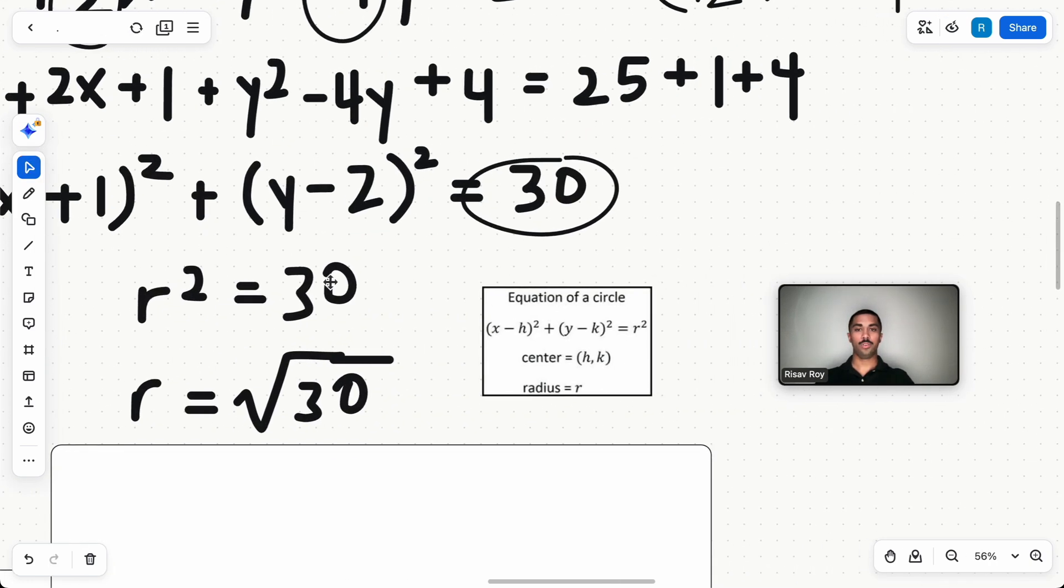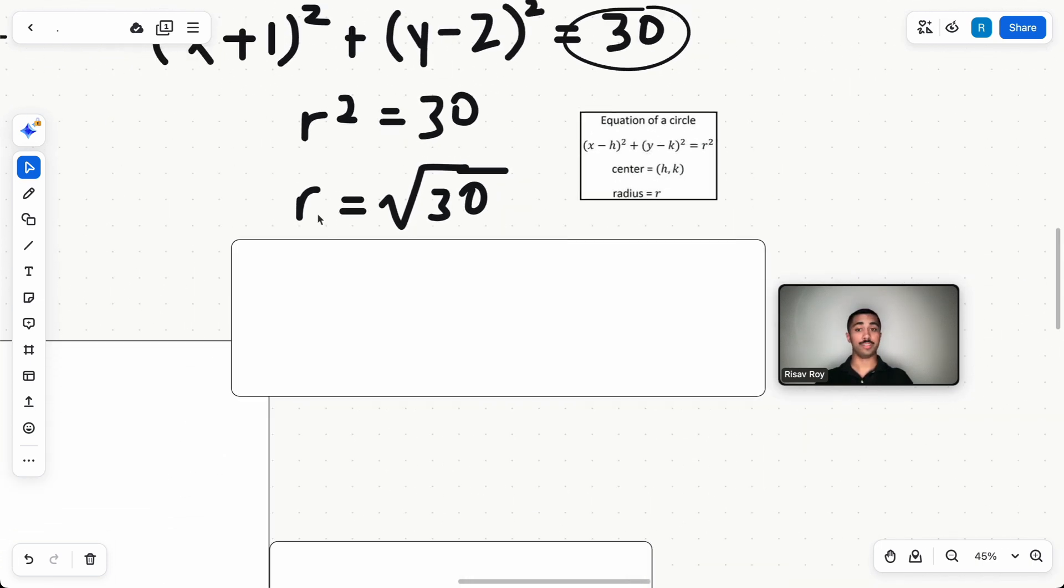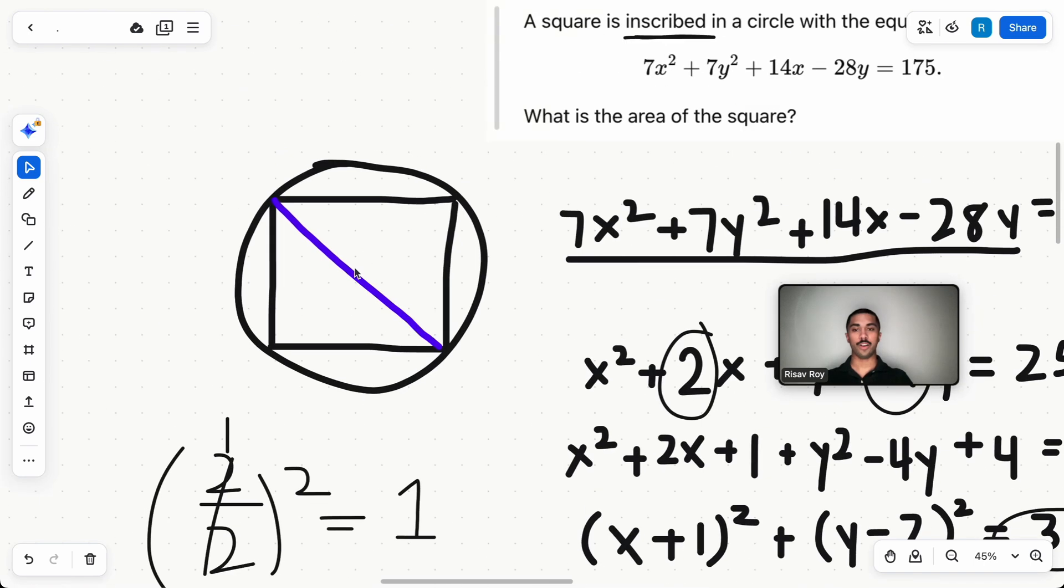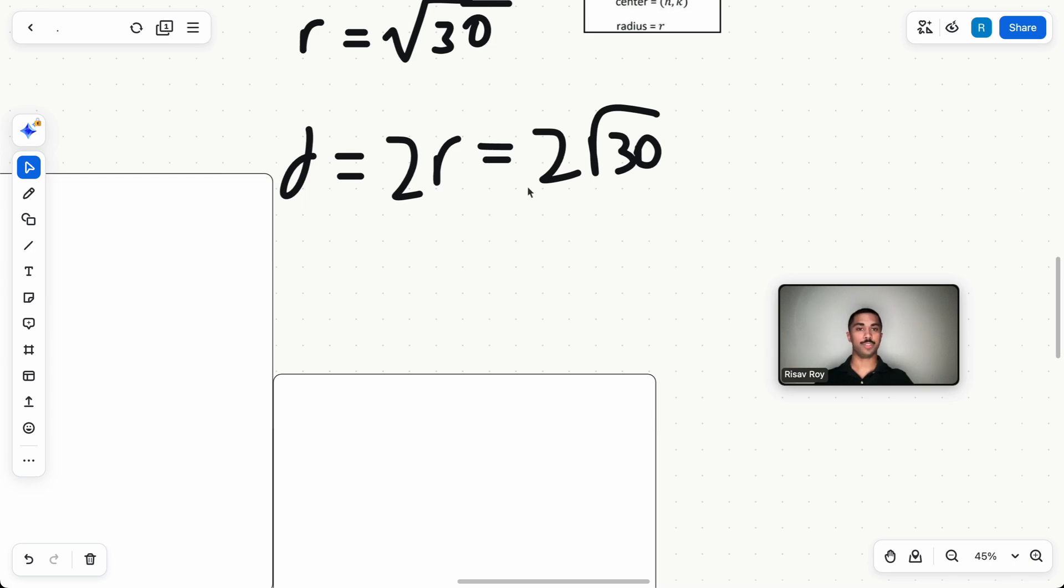Okay, so now this is in the equation of a circle. So we can read the radius, r² equals 30. That means the radius is the square root of 30. We just found the radius, which is this part, from the center to one corner of the square, basically.